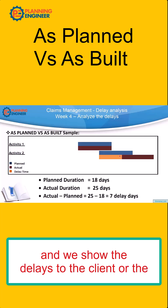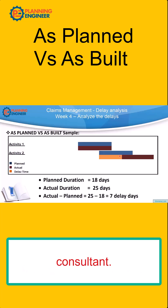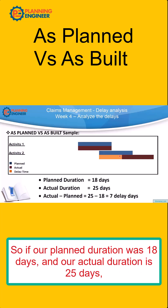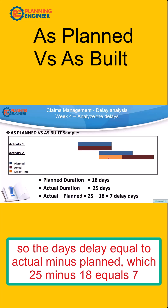We put the planned, we put the actual, and we show the delays to the client or the consultant. So if our planned duration was 18 days and our actual duration is 25 days, then the days of delay equal actual minus planned, which is 25 minus 18 equals 7.